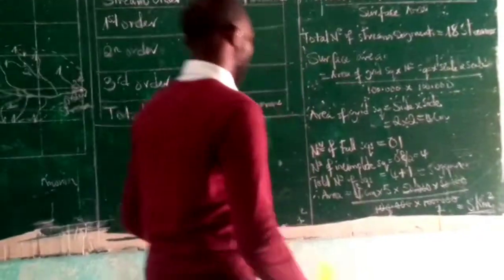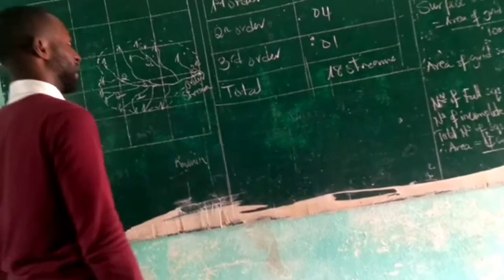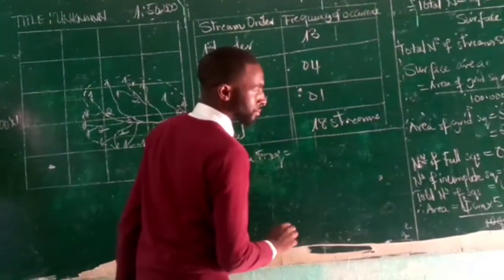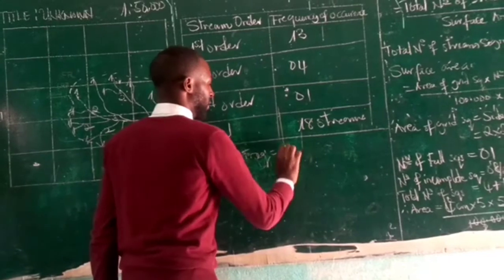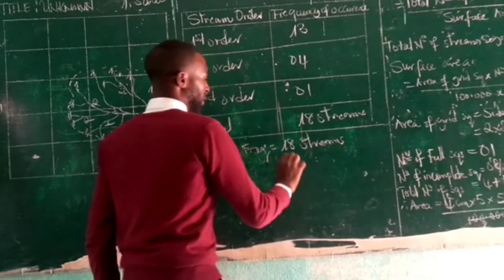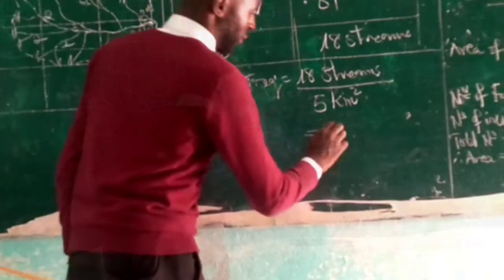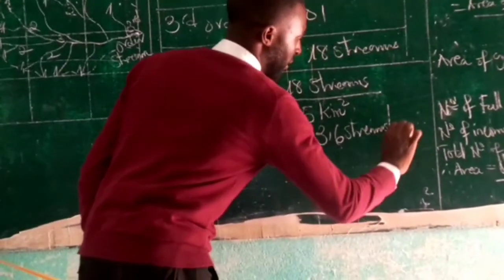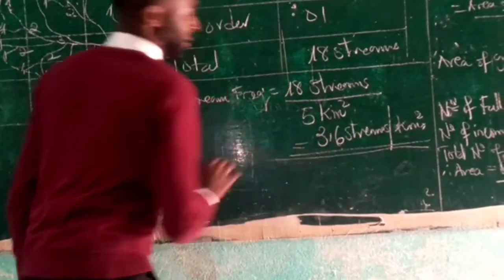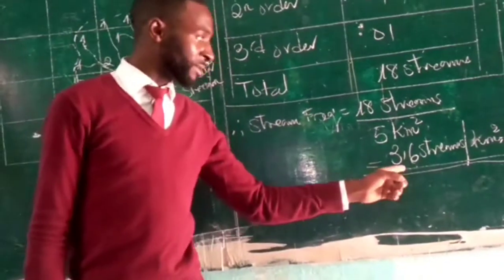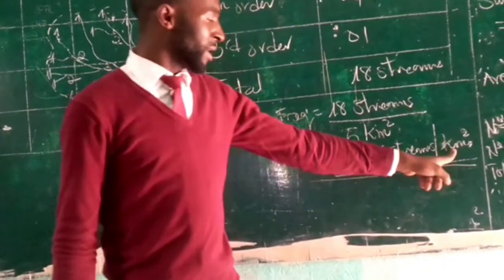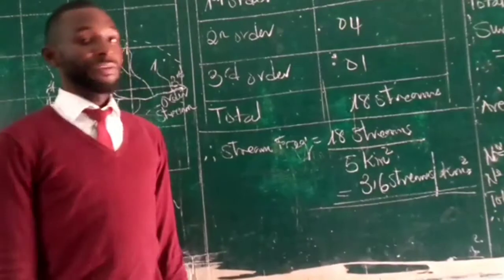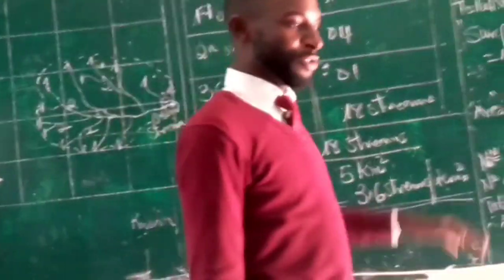Now we have all the values to calculate stream frequency. Stream frequency = total number of stream segments ÷ surface area = 18 streams ÷ 5 km² = 3.6 streams per square kilometer. The significance of this answer is that within one square kilometer area one is expected to find at most or at least approximately four streams. Always remember to state the significance of your answer when reporting stream frequency.